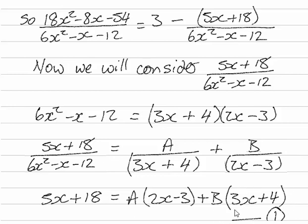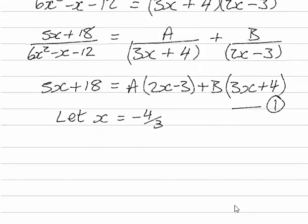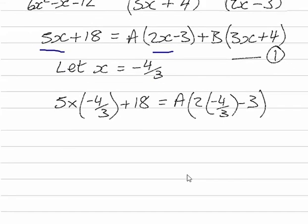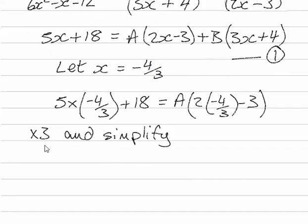To get rid of this bracket we're going to let x equal minus 4 over 3. And we put that into the expression. We've got 5 times minus 4 over 3 plus 18 and we've got A times 2 times minus 4 over 3 minus 3. So I'm going to multiply both sides by 3 and then simplify.